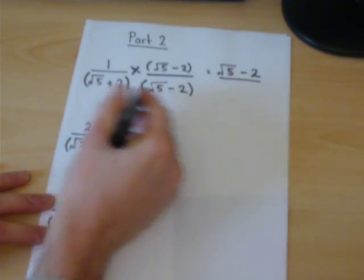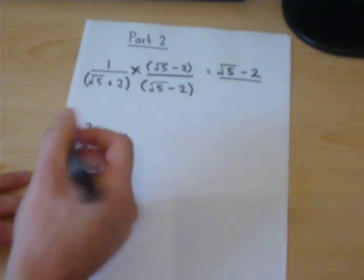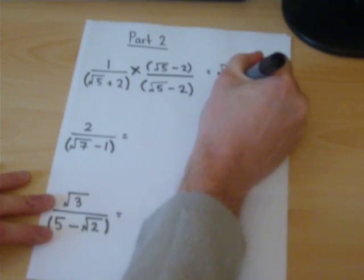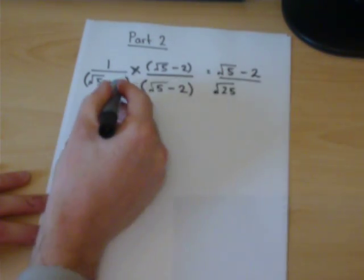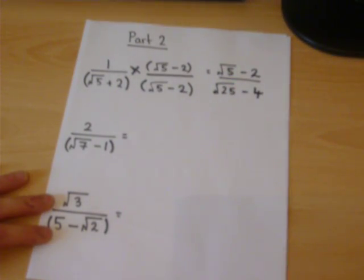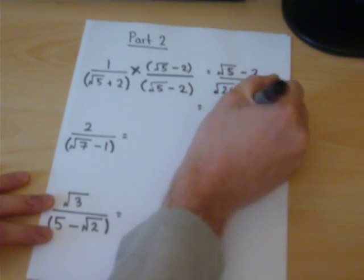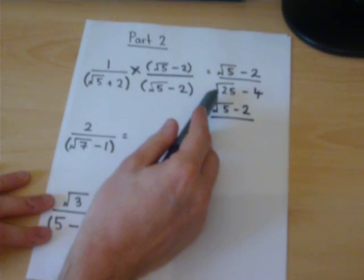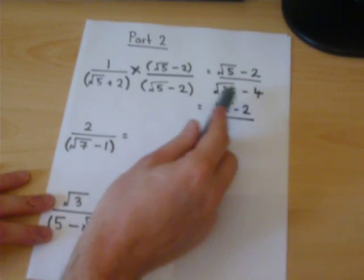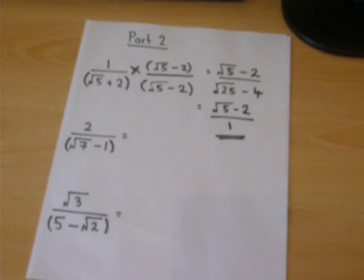But this is a special type of expression which you can learn in so much as the root 5s come together to give root of 25. And 2 times minus 2 is minus 4. Almost there because root of 25 is 5 and 5 take away 4 is 1. So that is therefore being rationalised.